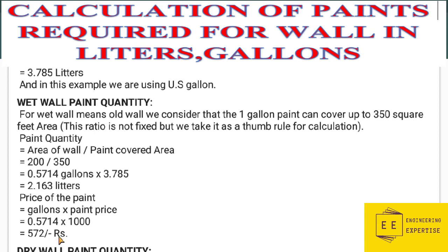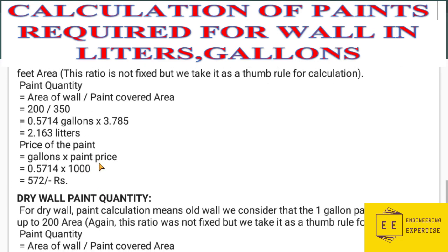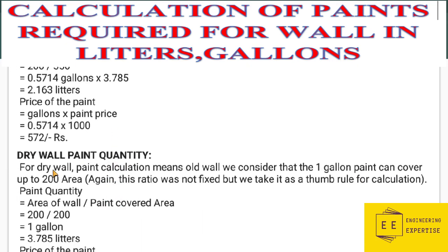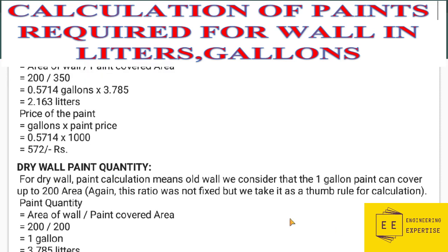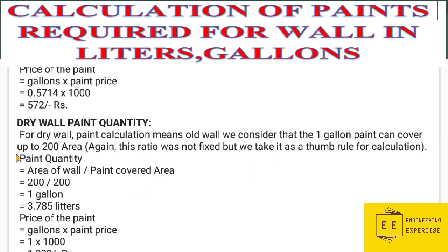This gives us 572 rupees. This is just an example — the price will vary from country to country and place to place. Next, for dry wall paint quantity (new wall, not painted before), the thumb rule changes. We consider that one gallon of paint can cover up to 200 square feet for a new wall. This ratio is not fixed but is taken as a thumb rule for calculation.